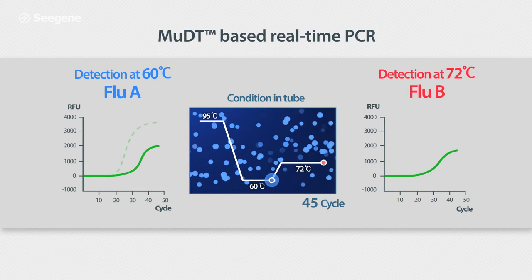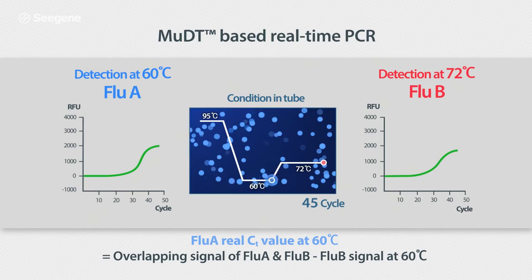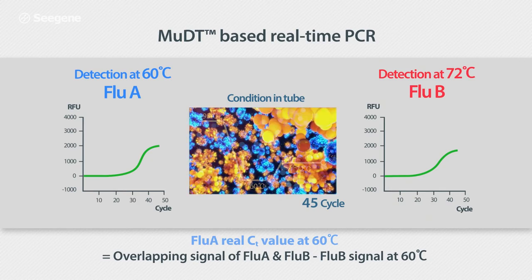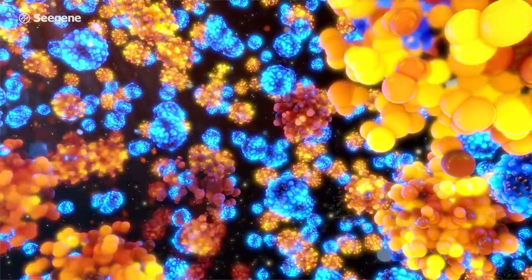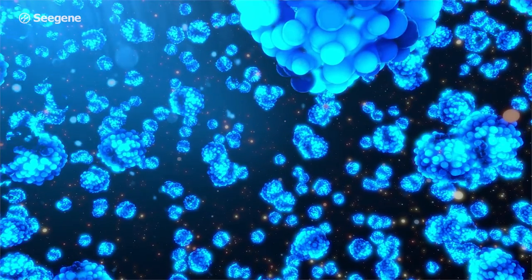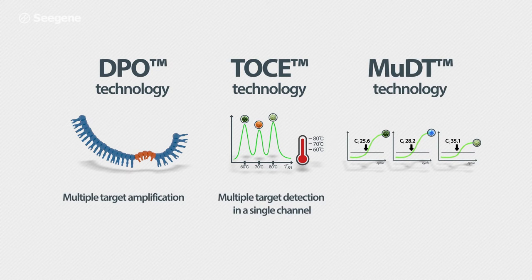Now, MUDT works in this step. It exactly subtracts the fluorescent signal for FLU-A from the overlapping signal collection at 60 degrees Celsius. MUDT then converts the subtracted fluorescent signal for FLU-A into a CT value. In conclusion, MUDT technology combined with the advantages of DPO and TOS enables the measurement of target CT values by analyzing fluorescent signals collected at different detection temperatures.